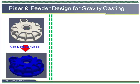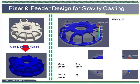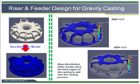The mass distribution index (MDI) is an important value to guide the design of the riser, feeder, and gate. The location with a higher MDI value is just the place to put the riser or feeder.